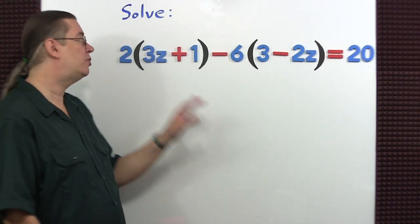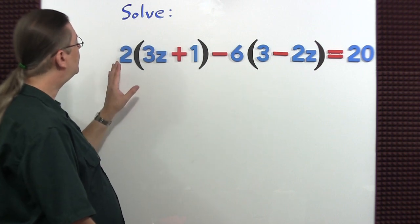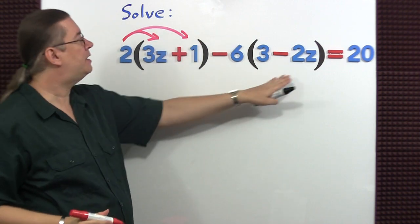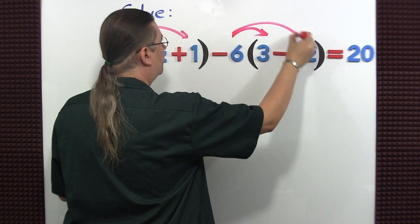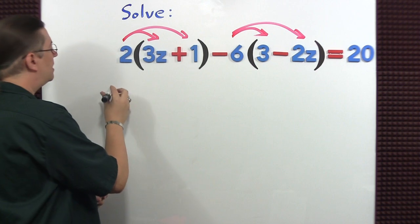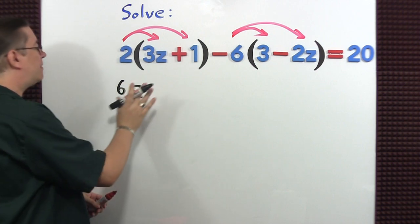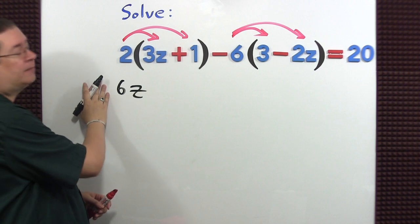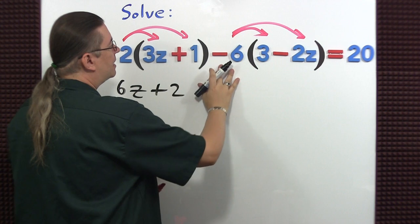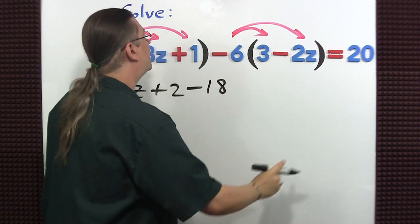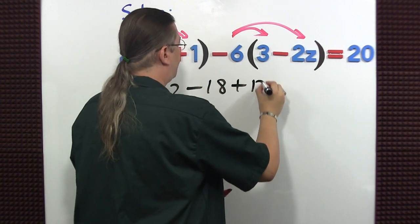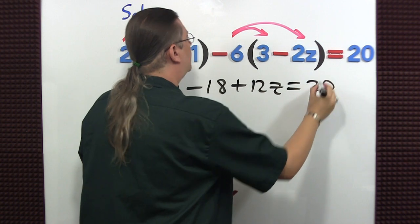Once again, let's apply the distributive property to solve this equation. Let's go ahead and distribute the 2 to each of these two terms, and negative 6 to these two. Let's go ahead and multiply everything out. First, positive 2 times positive 3z is a positive 6z. If it's the first term, you don't have to write down the plus sign in front of it. Positive 2 times positive 1, positive 2. Negative 6 times positive 3 is negative 18. Negative 6 times negative 2z is positive 12z. That's equal to 20.